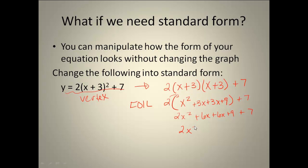And the last thing I need to do is combine like terms. So I'm going to have 2x squared. My 6x and my 6x will turn into 12x. And this 18 plus 7 would give me a 25. So my standard form is y equals 2x squared plus 12x plus 25.